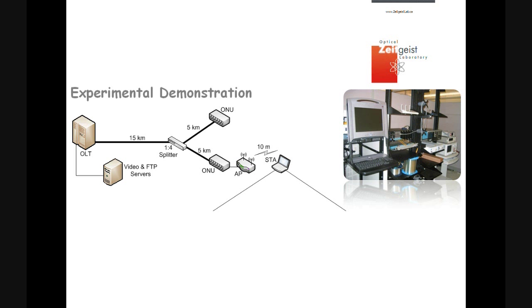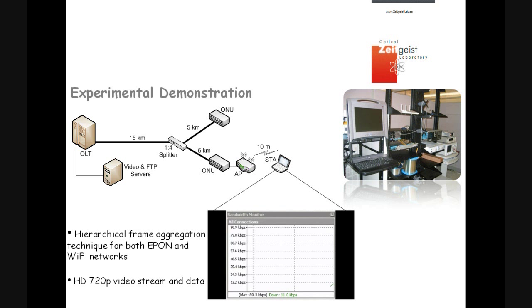For the high definition 720p video stream and data, the following results were shown in the station. This is the throughput versus time using bandwidth monitor application. We observe many peak points in the results due to the time for copying the stored huge file at the temporary RAM memory into the hard drive.